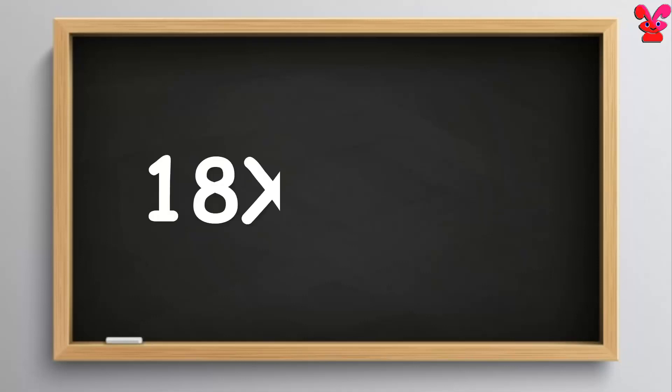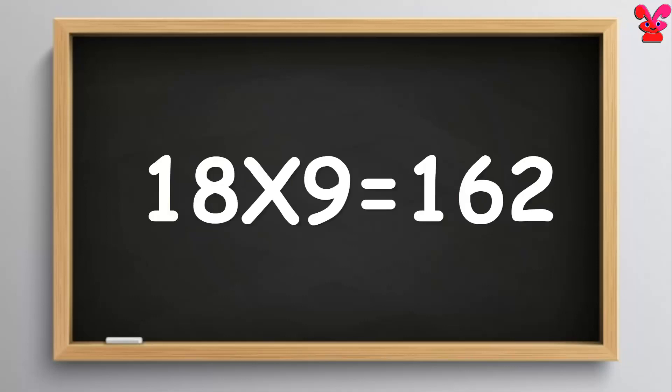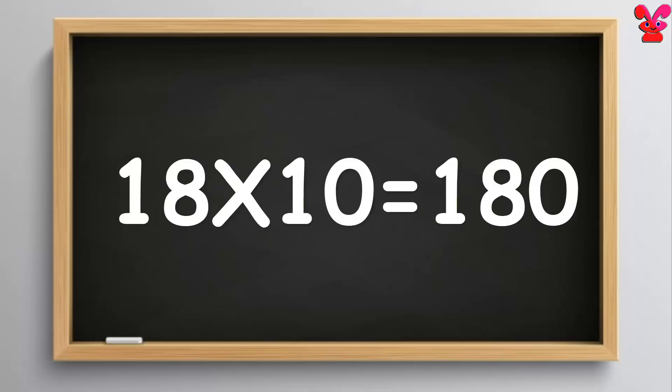18 nines are 162. 18 nines are 162. 18 tens are 180. 18 tens are 180.